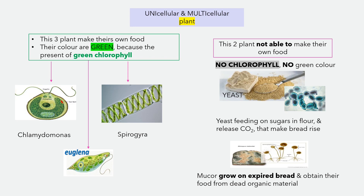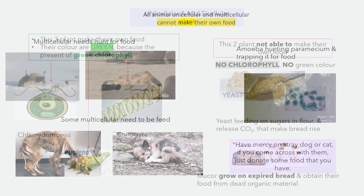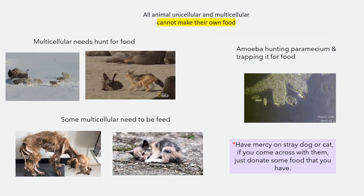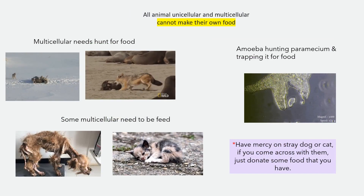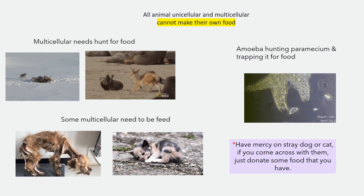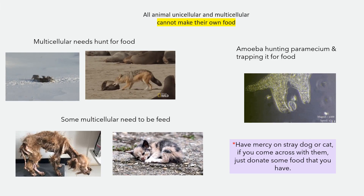Yeast feeds on sugar in flour and releases carbon dioxide, which makes bread rise. Mucor grows on expired bread and obtains food from dead organic materials. All unicellular and multicellular animals cannot make their own food — they either hunt for food or need to be fed.